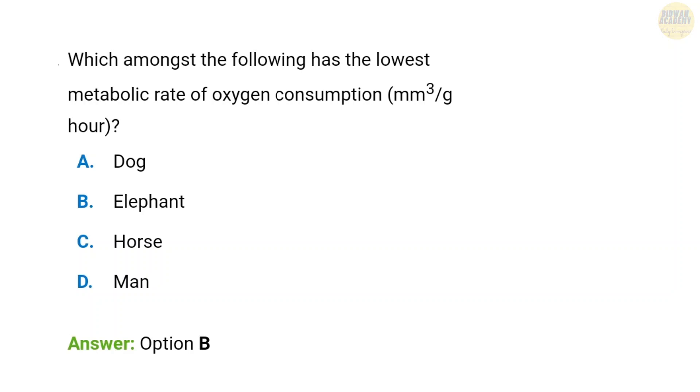Next question: Which among the following has the lowest metabolic rate of oxygen consumption? The correct answer is elephant. The elephant has the lowest metabolic rate of oxygen consumption.